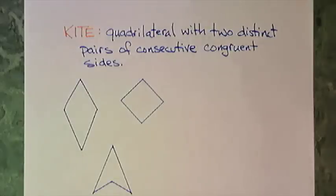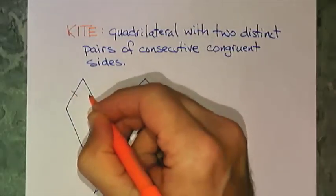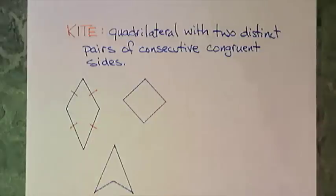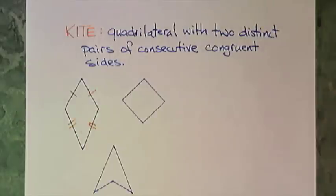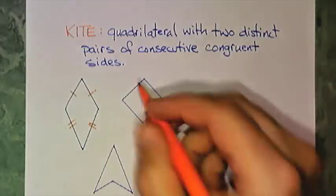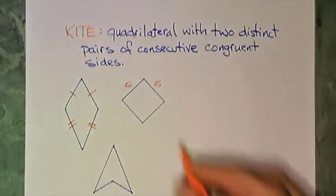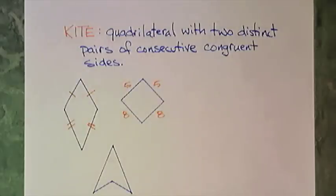So let's mark these as kites. This side congruent to this side. Consecutive. This side congruent to this side. That's not a kite because I have to be distinct. So I'm going to mark this with two marks. I could also put, of course, numbers that makes a kite.